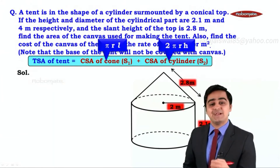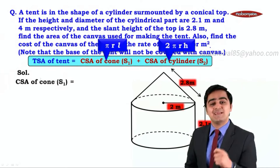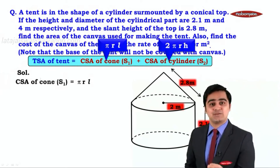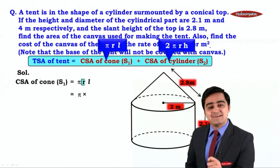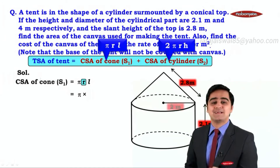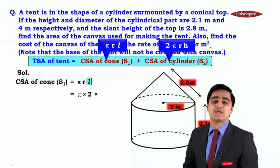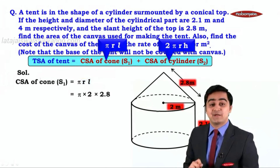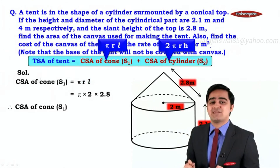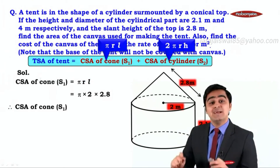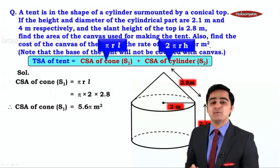Now let us calculate the curved surface area of the cone. The formula is πrl. Substituting the values: π × 2 × 2.8. Two into 2.8 is 5.6. So we have the curved surface area of the cone, S1, equal to 5.6π meter square.